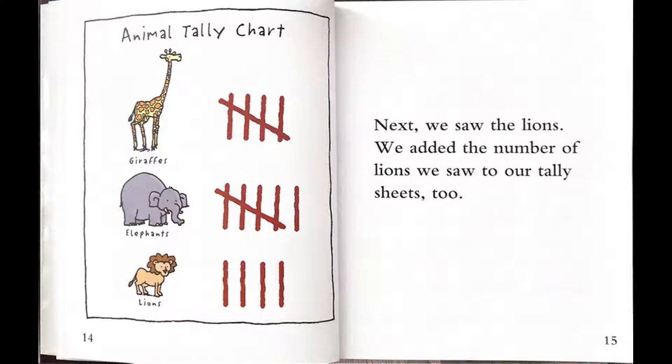Animal tally chart: Giraffes — 5. Elephants — 6. Lions — 4.